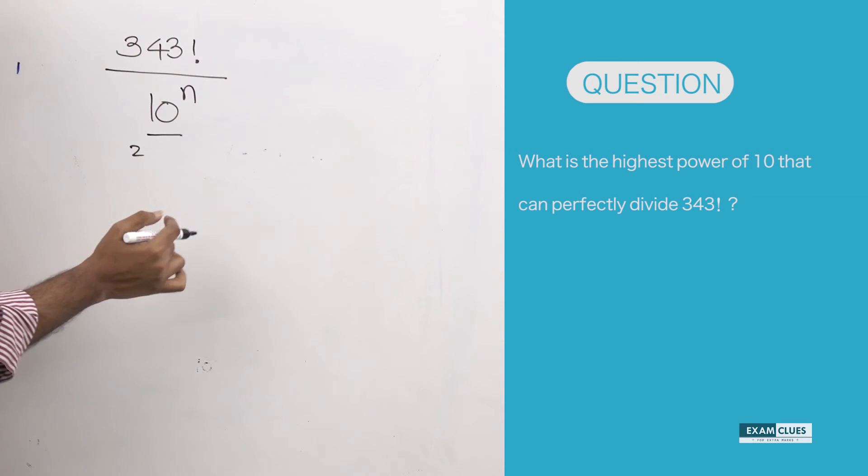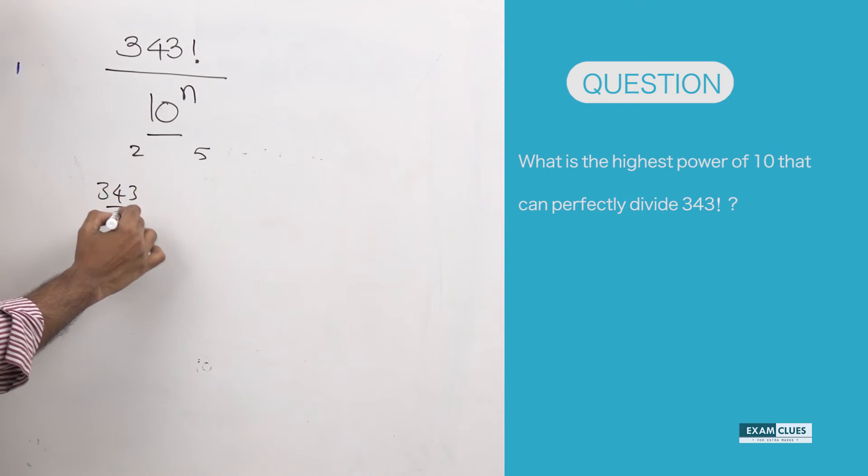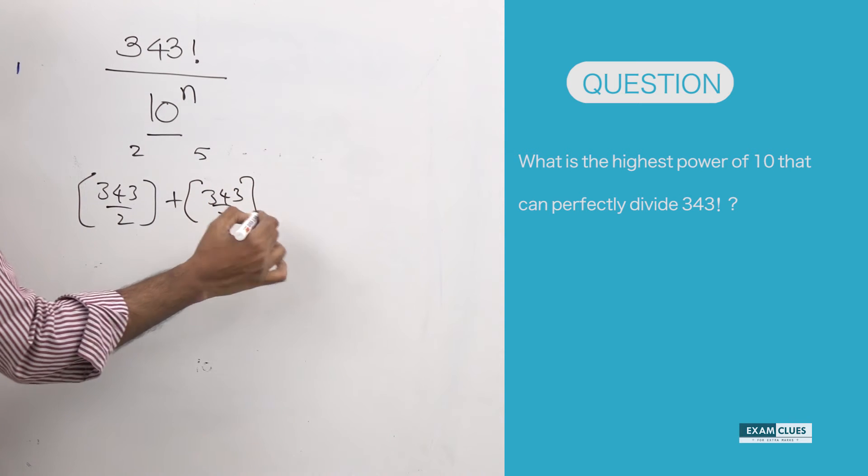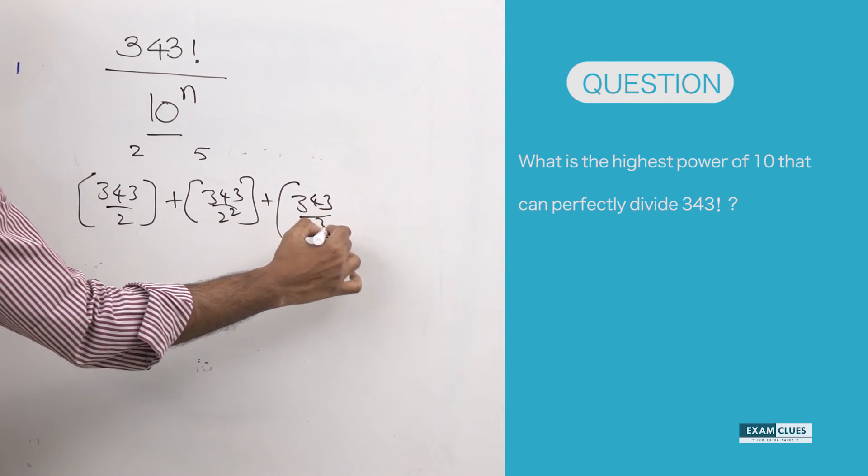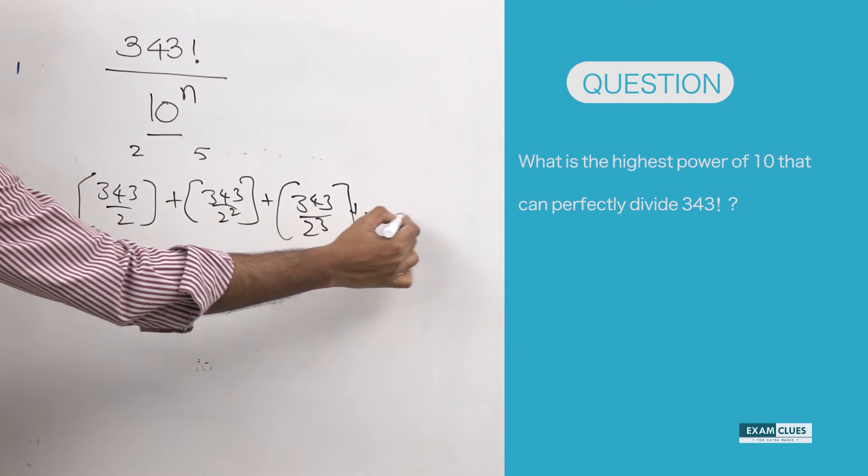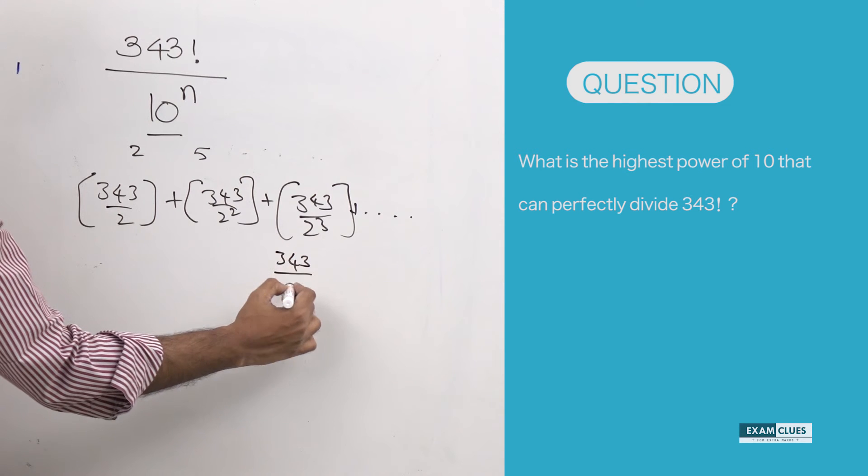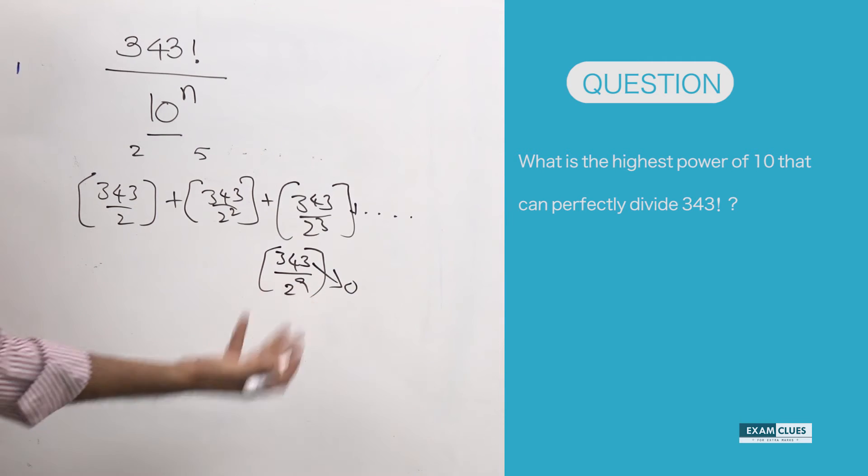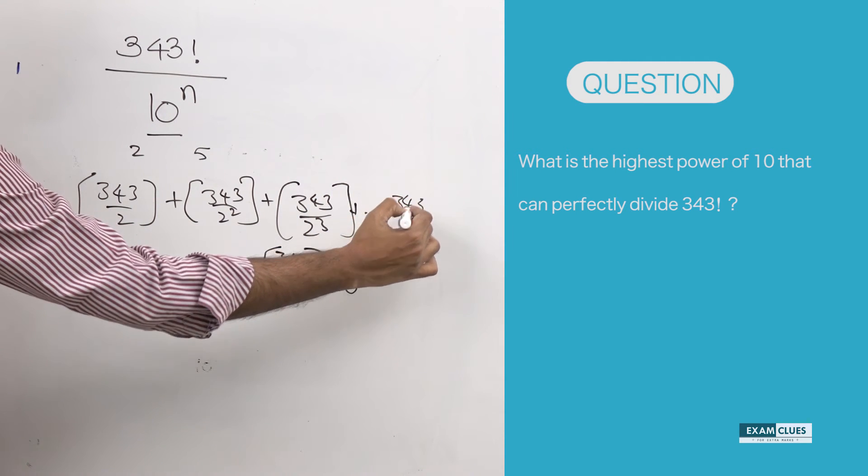Now you need to apply the same concept. As I mentioned, we need to consider 2s and 5s within this 343 factorial. So: 343 divided by 2 apply step x, plus 343 divided by 2 squared apply step function, plus 343 divided by 2 cubed apply step function, and so on, up till 343 divided by 2 to the power 9. But this will be zero anyway because 512, so we'll only consider up till 343 divided by 2 to the power 8, which will yield 1.